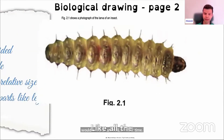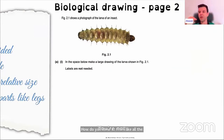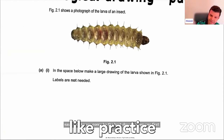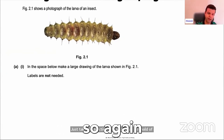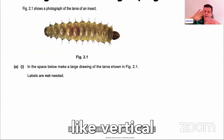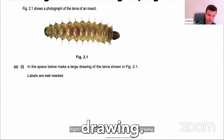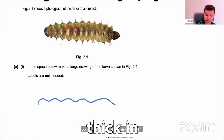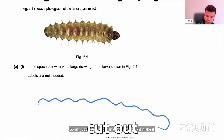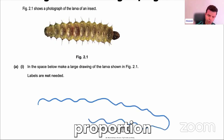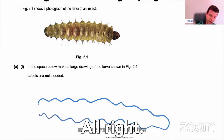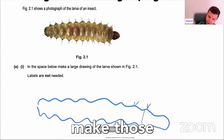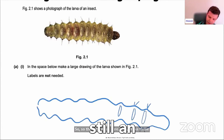So how do you draw to score all the marks? They're easy marks. You're not going to be the best drawer when you first draw — just practice and you'll get the hang of it. So I'll try to draw it: I'm going to show an outline, make it thick in the middle, count the segments, show the proportions, and show the extensions. Make those inner contours — that's still an outline.